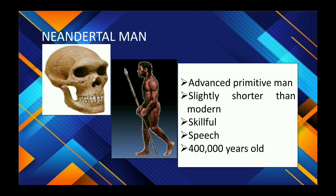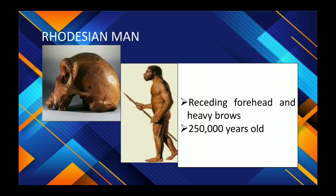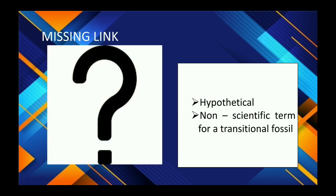Next is Tradition Man, with receding foreheads and heavy brows. They ate nuts and animals, had a cranial capacity of 1,300 cc, and lived 250,000 years ago.